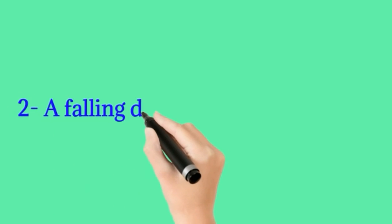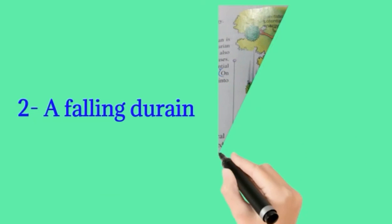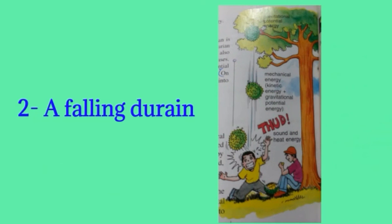The second example is a falling durian. This diagram shows the energy conversion in the falling durian. The stored gravitational potential energy in the durian is converted into kinetic energy when it is falling. As the durian falls, its speed increases and hence its kinetic energy also increases, while its gravitational potential energy decreases. Just before hitting the ground, all of its gravitational potential energy would have been converted into kinetic energy.